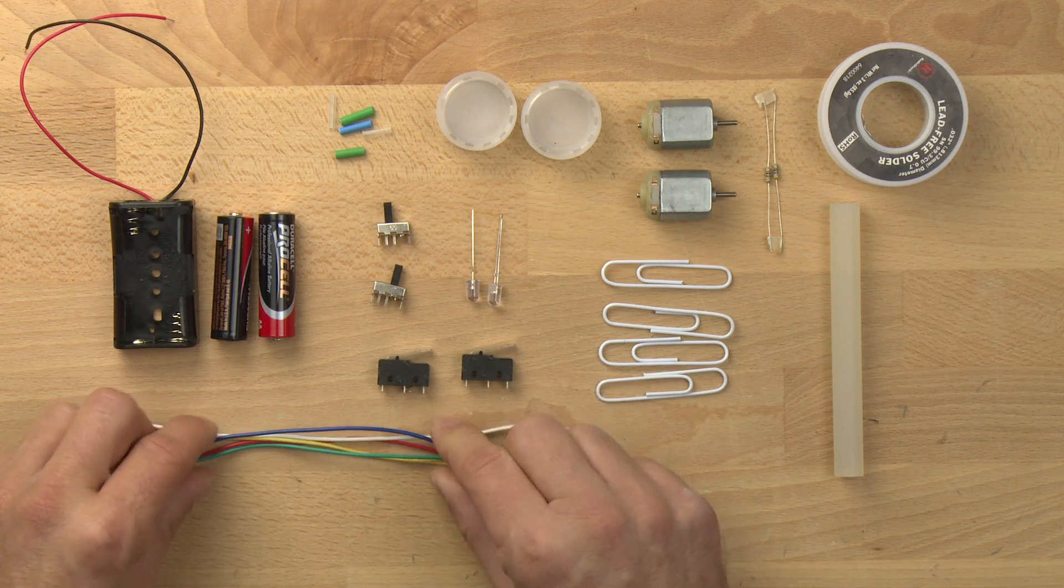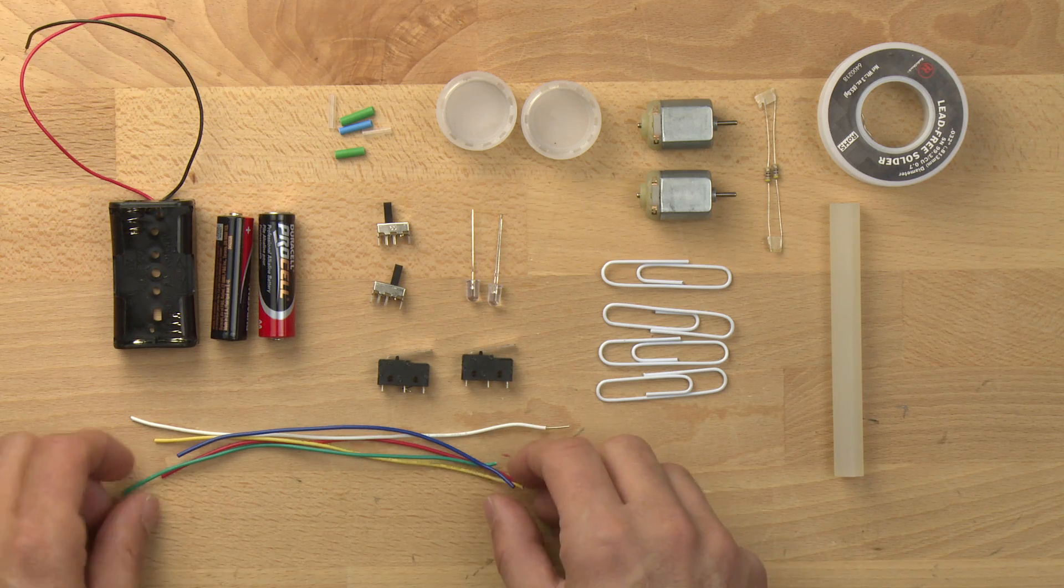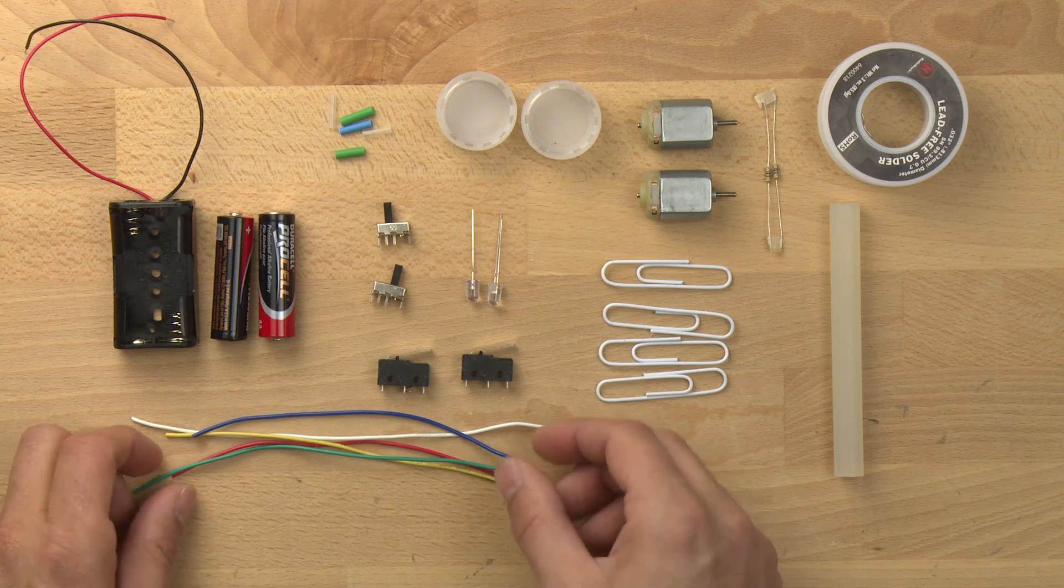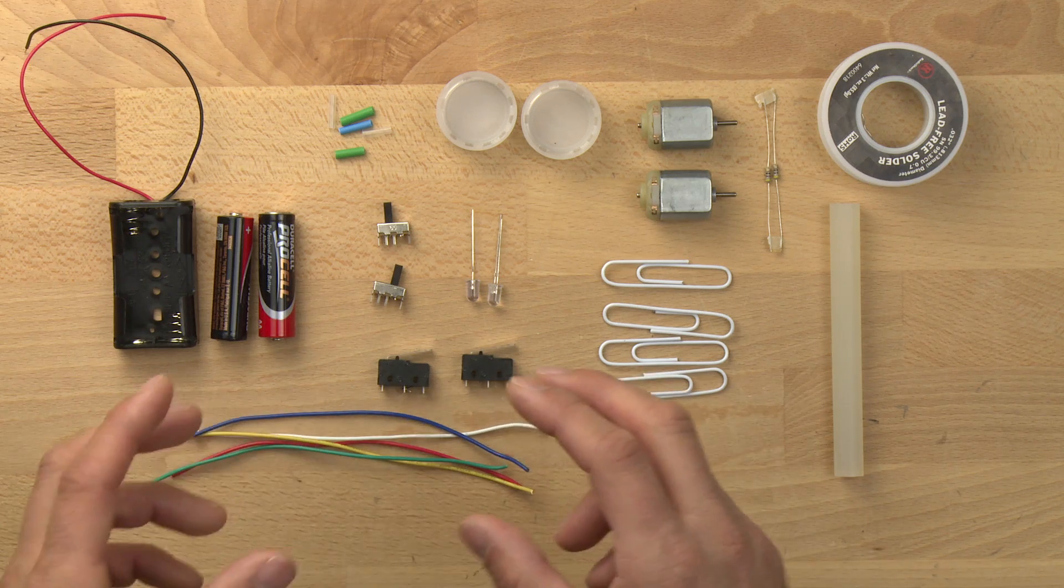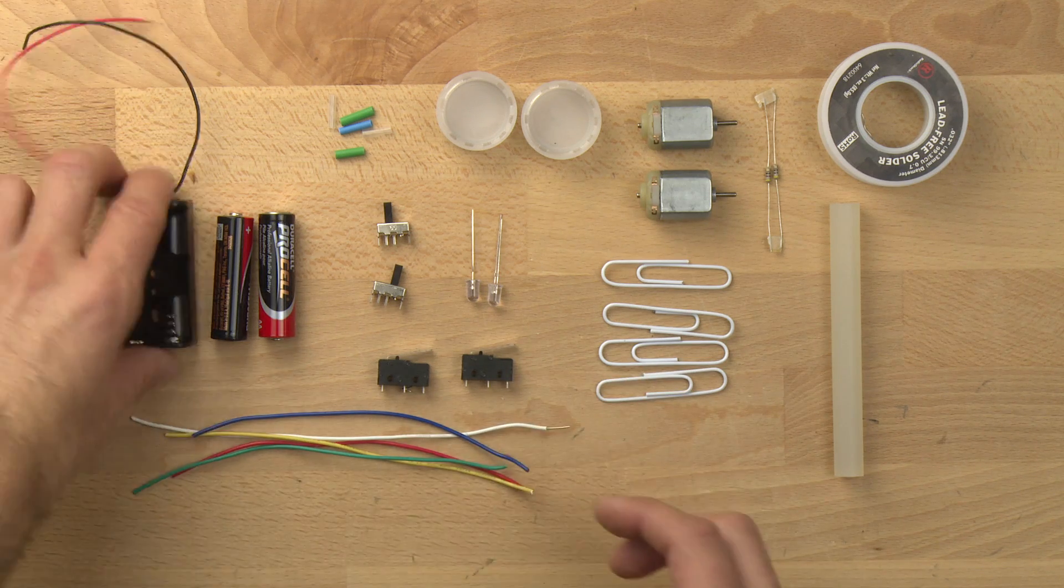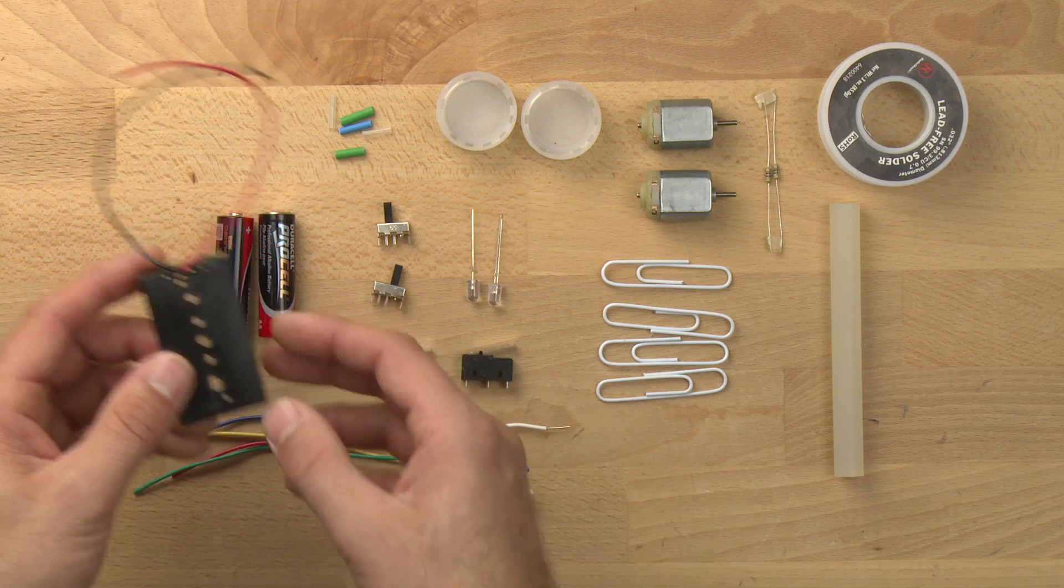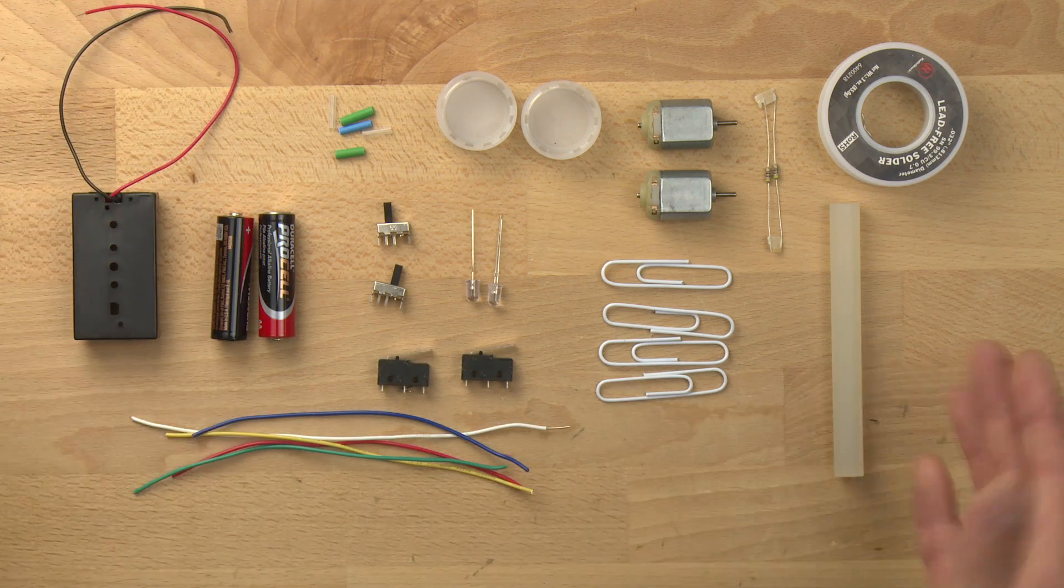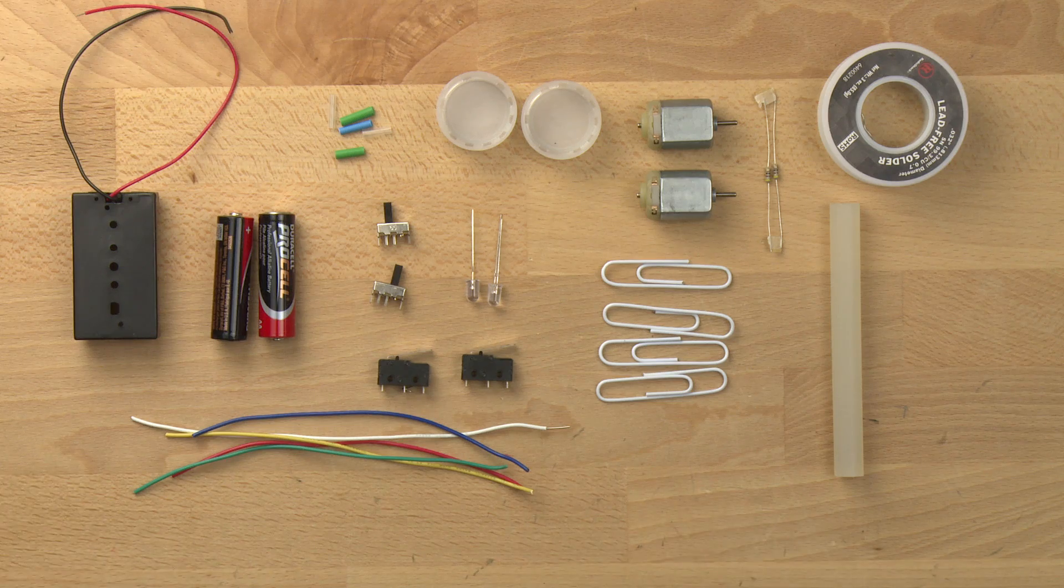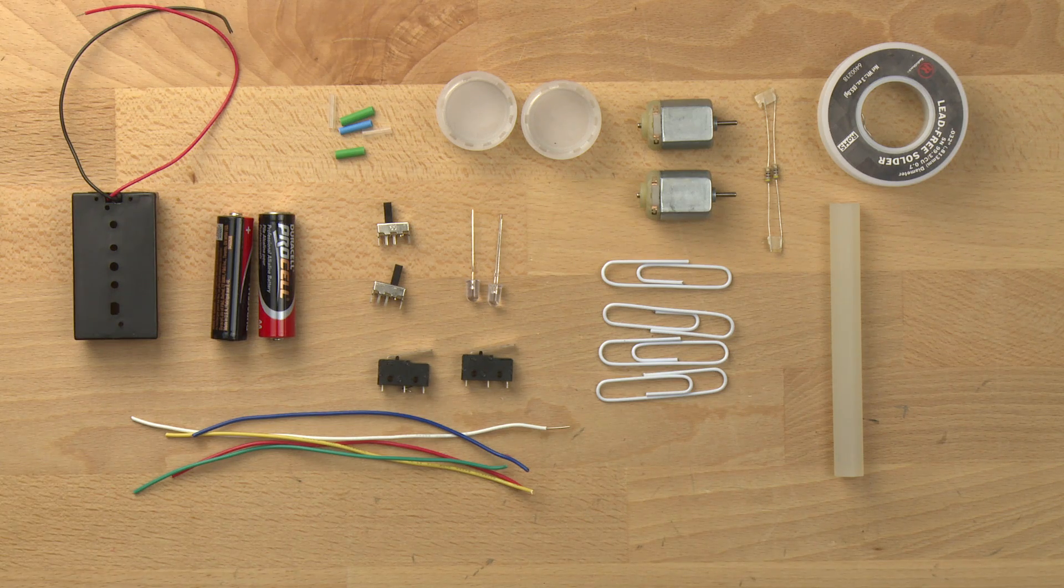And then we have wire. This is 22 gauge insulated wire. We've chosen a number of different colors: green, blue, red, yellow, and white. We chose those colors because they're going to show up better in the video when we put them on top of our battery holder. And this is our AA battery holder. So those are the parts that you're going to need to build the SpoutBot. Now we're going to talk about the tools.